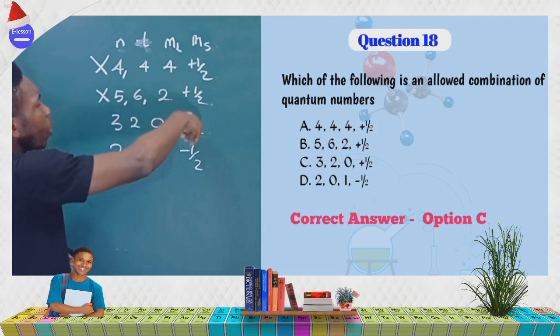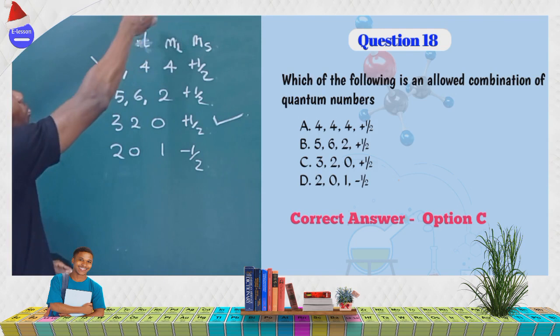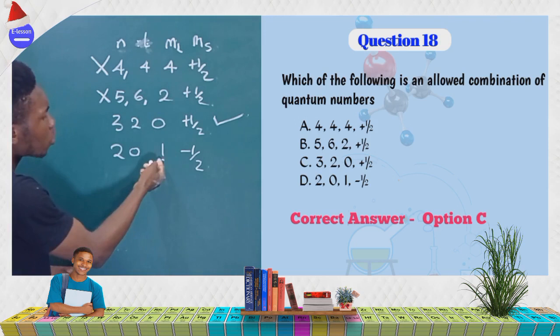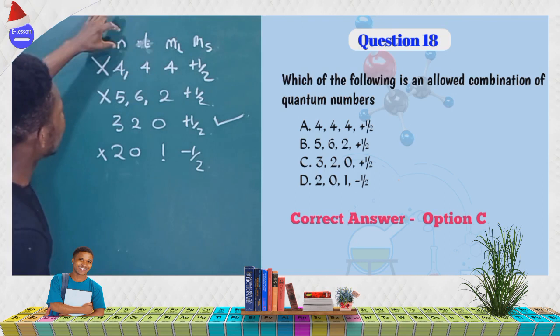On no account must your ML be greater than your L. So ML must not be greater than L. Looking at option D, n=2, L=0, ML=1 — here ML is greater than L, so this is wrong.